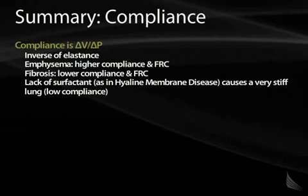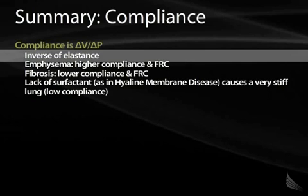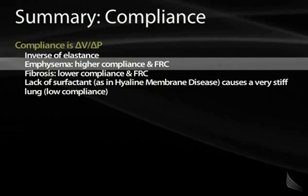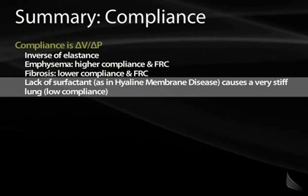Last, compliance: remember compliance is the change in volume over the change in pressure — it's the inverse of elastance. An emphysematous lung has high compliance, high FRC, and low elastance. A fibrotic lung has low compliance, low FRC, and high elastance. Lack of surfactant — as in hyaline membrane disease or infant respiratory distress syndrome — causes a very stiff, low compliance lung. That concludes our discussion of functional residual capacity, FRC, and lung mechanics as characterized by disease states.